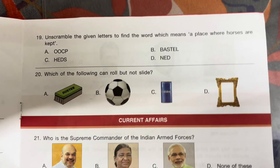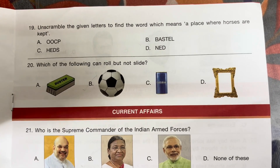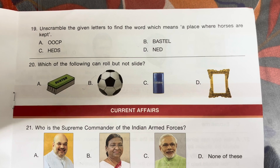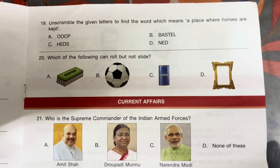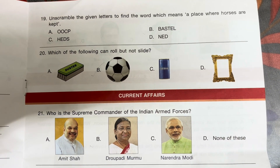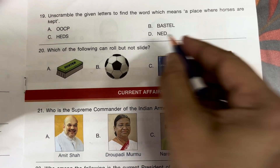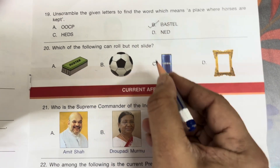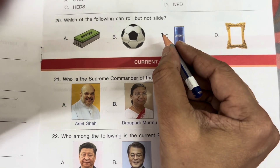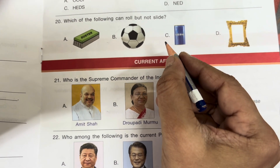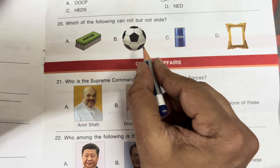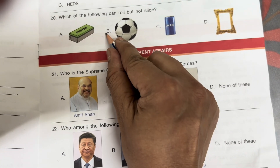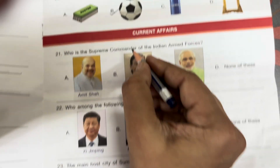Question 19: Unscramble the given letters to find the word which means the place where horses are kept. The answer is B — stable. Question 20: Which of the following can roll but not slide? Answer is B — ball.